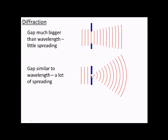If the gap is similar to the wavelength, so in this second example, the wave starts to spread out. Now you might have seen this in rock formations in the sea, for example, but it also explains why we can hear through doors, but we can't see round corners.